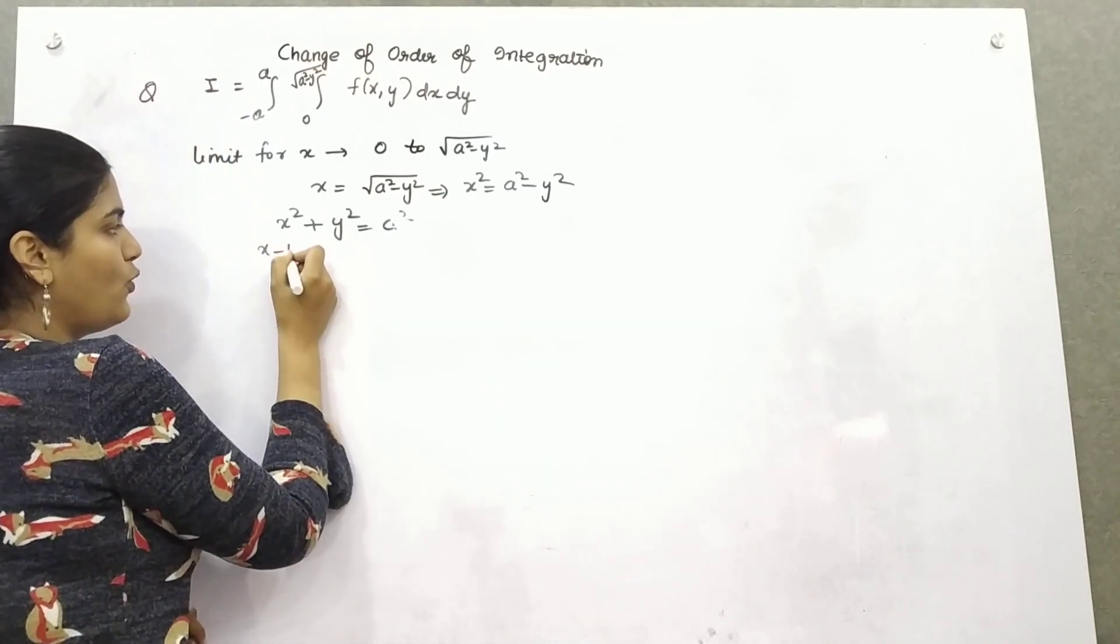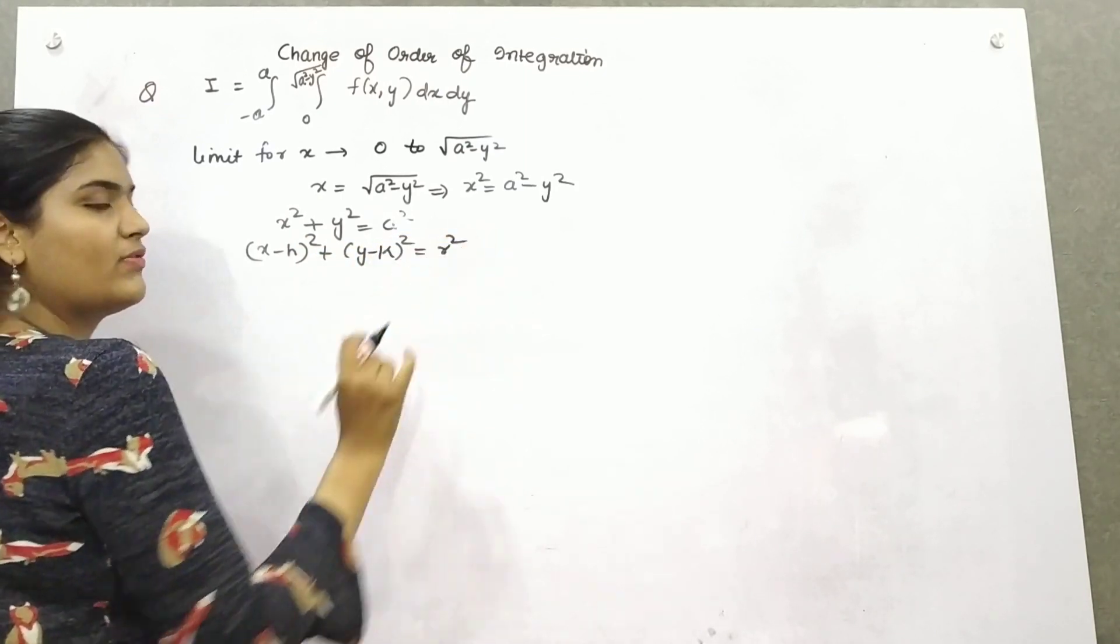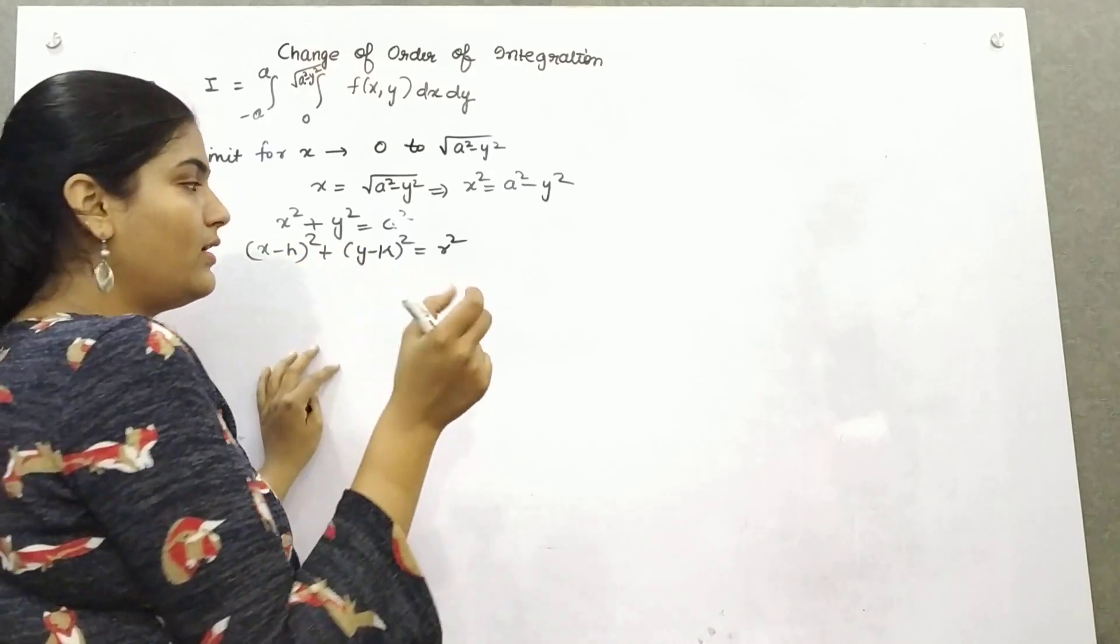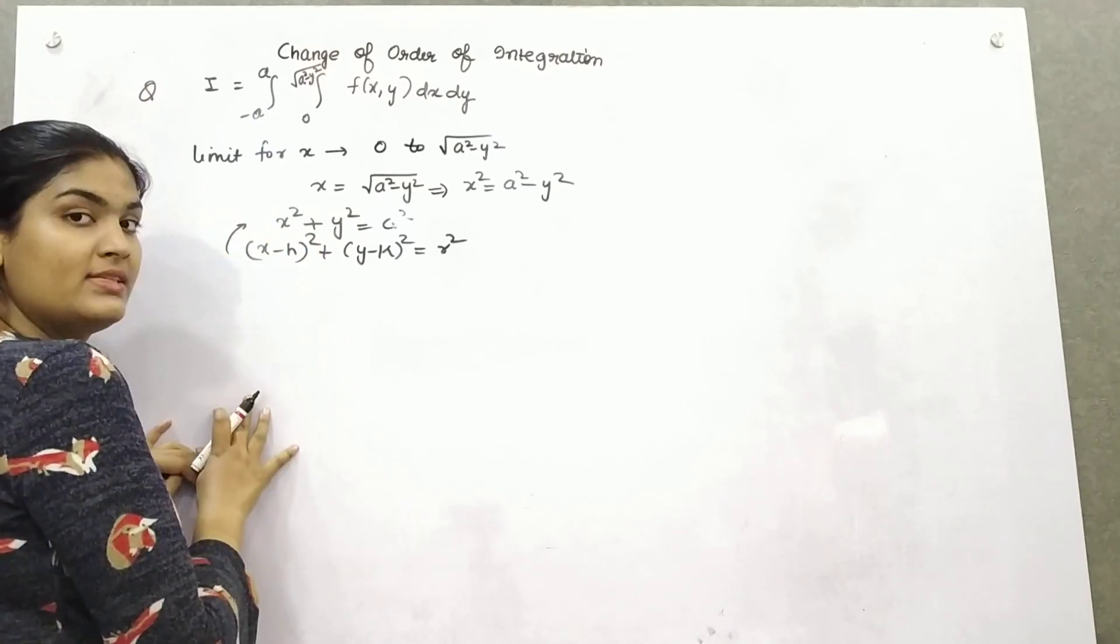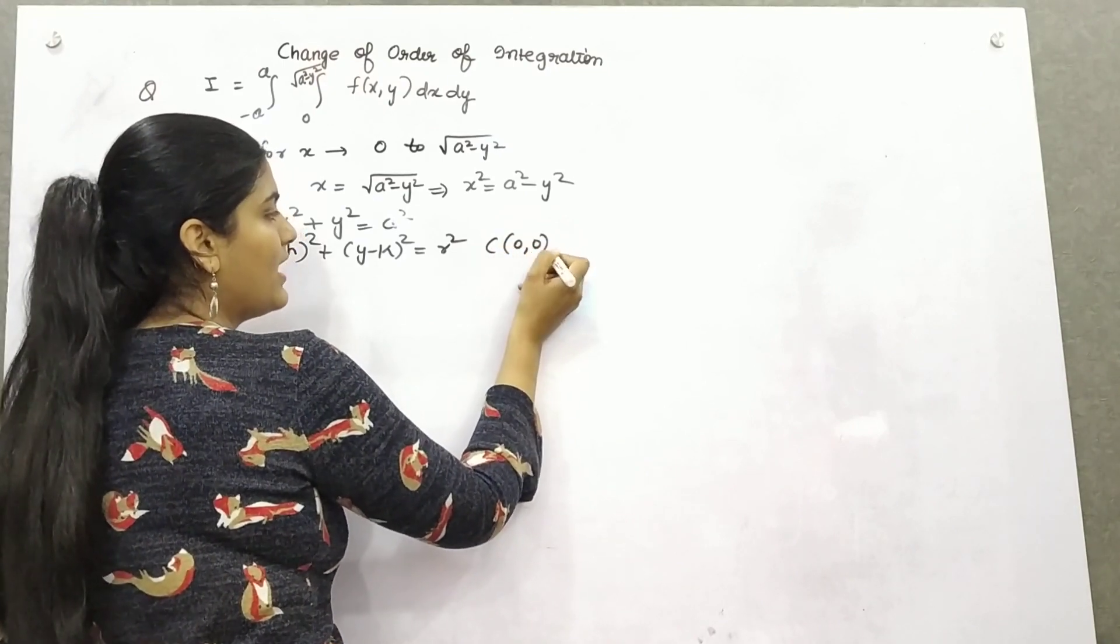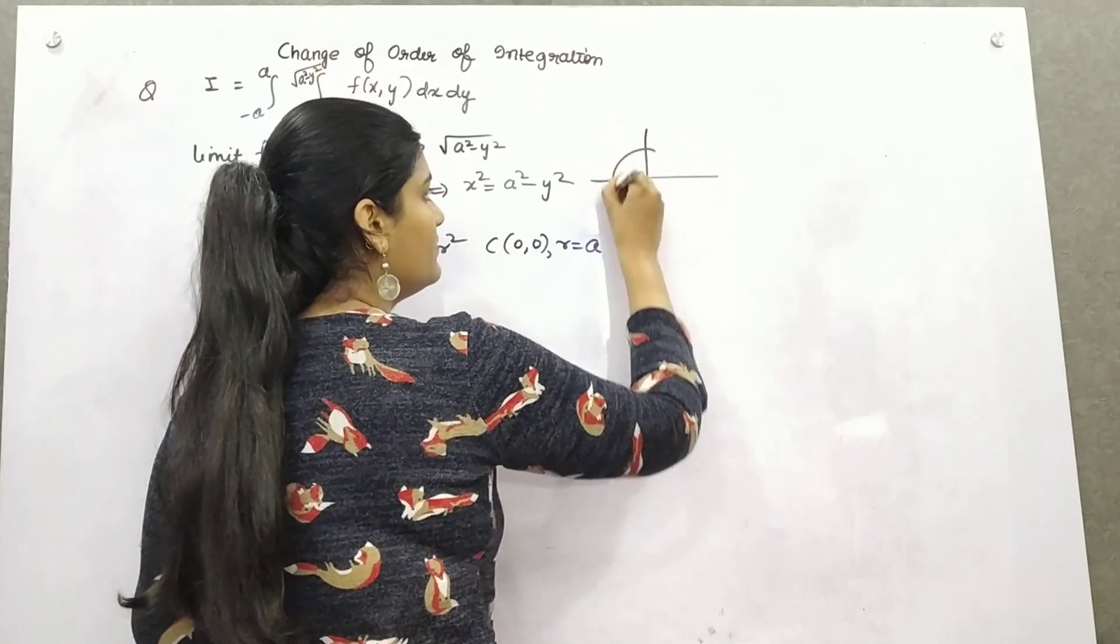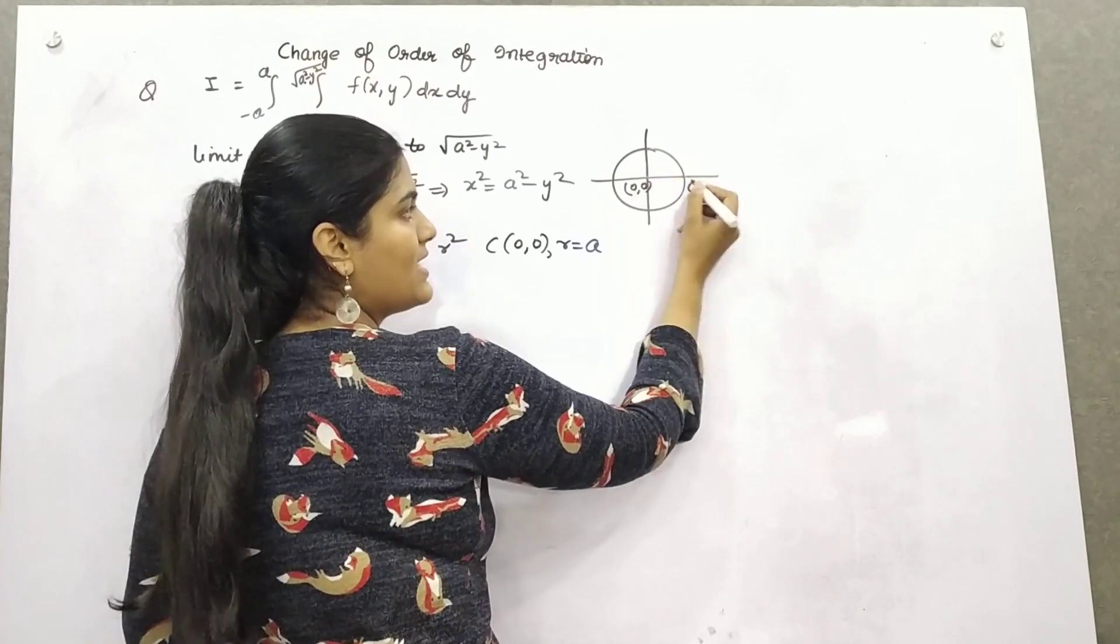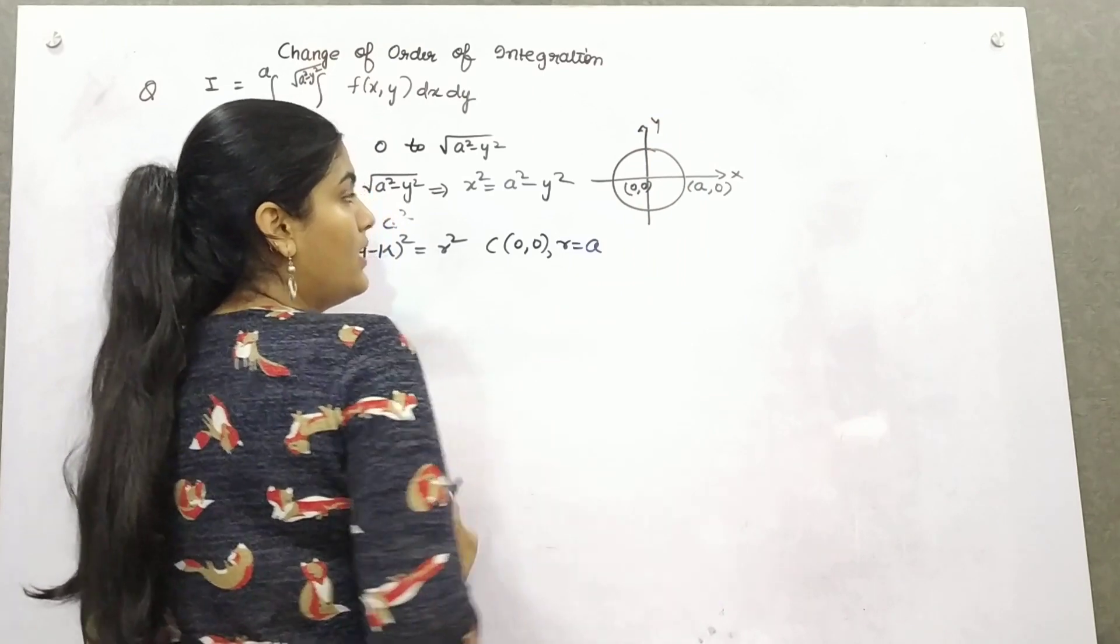x minus h whole square plus y minus k whole square equals r square. This is the general form of a circle. Now h and k, which are the coordinates for the center, h and k here is 0, and r is a. So center is (0,0) and radius is a. Because it is a circle, let's make a circle whose center is (0,0), and because radius is a, so (a,0).